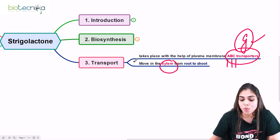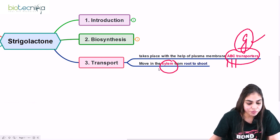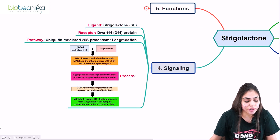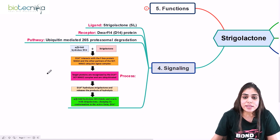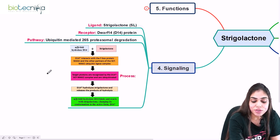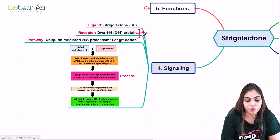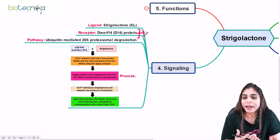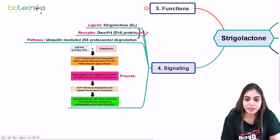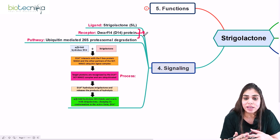Now let's look at the signaling mechanism — how strigolactone-induced gene responses occur inside cells. Any signaling process requires two main players: a ligand and a receptor. In this pathway, strigolactone itself acts as the ligand. The receptor is the D14 protein, also called the Dwarf 14 protein. When no ligand is present, signaling is shut down; when strigolactone is present, it binds specifically to the D14 receptor and activates signaling.